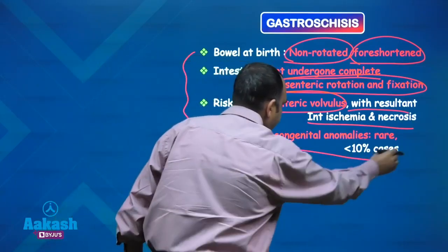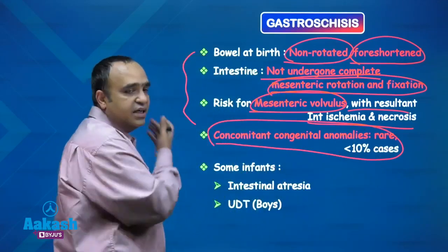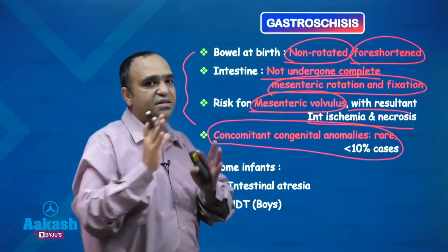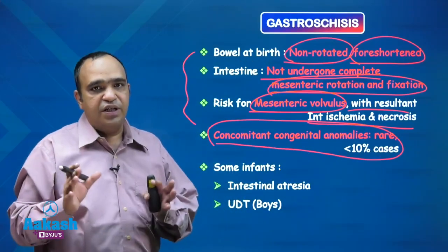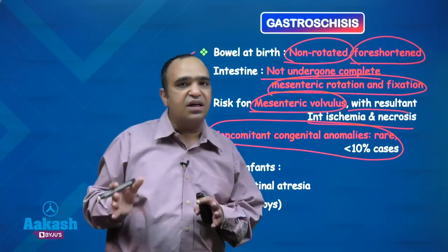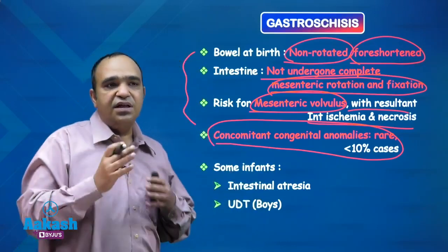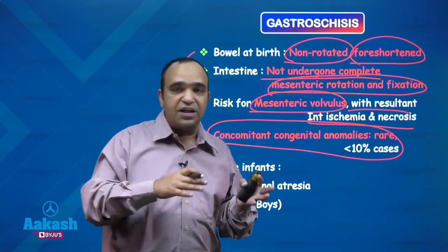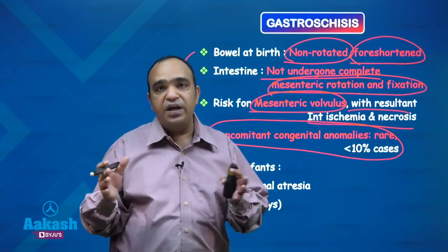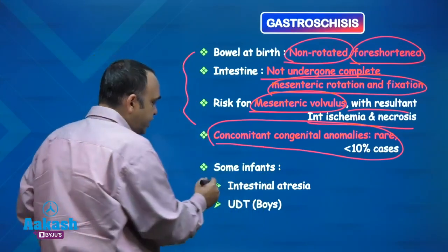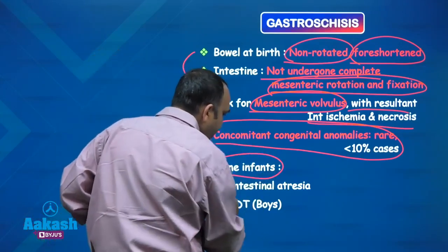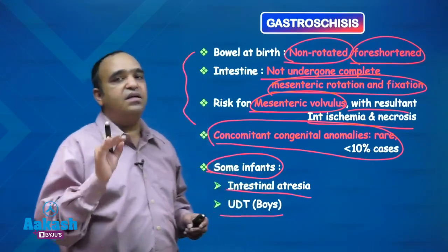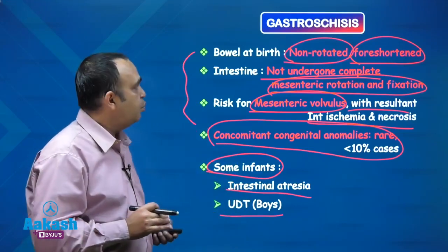These babies are prone to mesenteric volvulus, which can lead to intestinal ischemia and gangrene. Concomitant congenital anomalies in gastroschisis are rare — less than 10 percent. So gastroschisis is essentially an isolated anomaly, not frequently associated with other congenital anomalies. Some infants, however, can have intestinal atresia, and undescended testes may be an associated finding in boys.